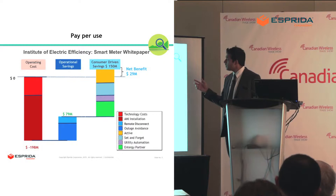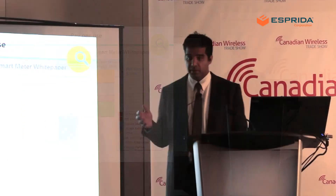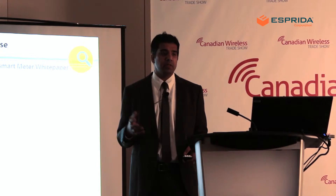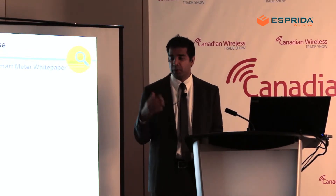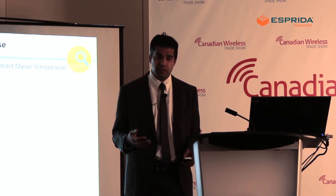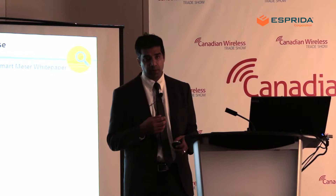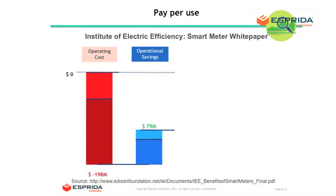The first popular model is pay-per-use. A key reference point is the utility industry — smart meters where you pay for electricity based on actual use rather than estimates. Based on a smart meter white paper from the Institute of Electric Efficiency, the operating cost was almost $200 million for hardware, installation, and connectivity. The savings in billing and data collection was less than half of that.